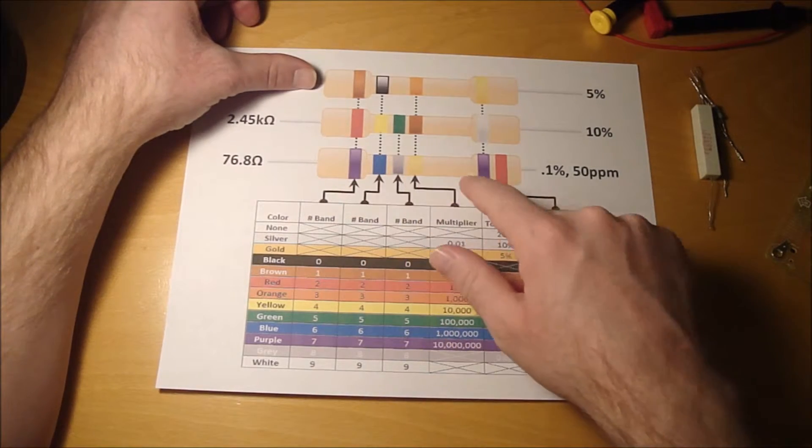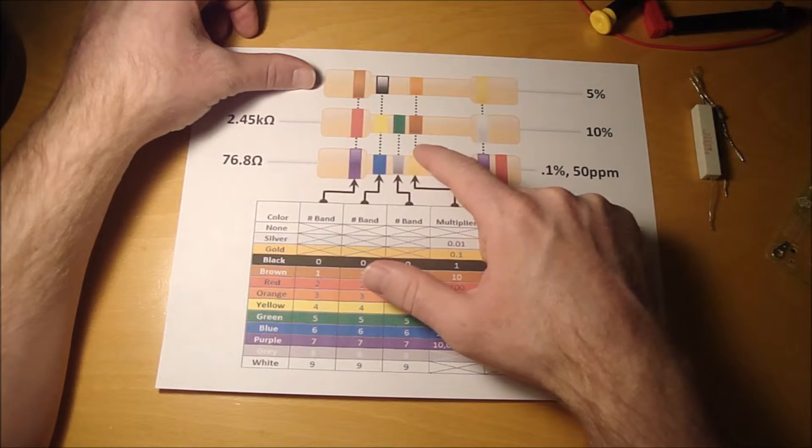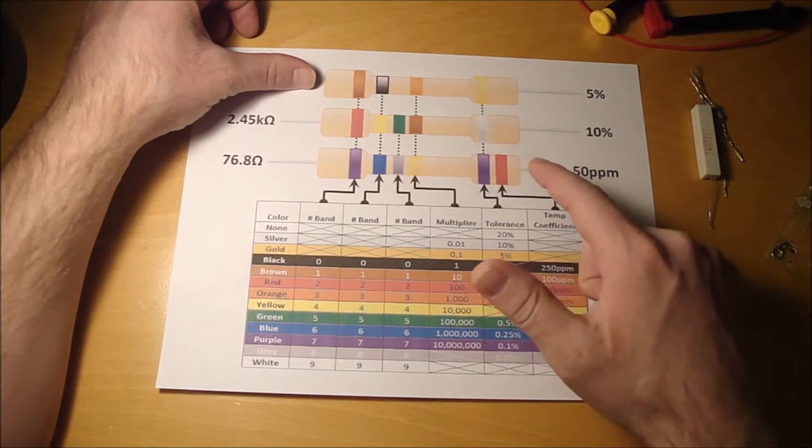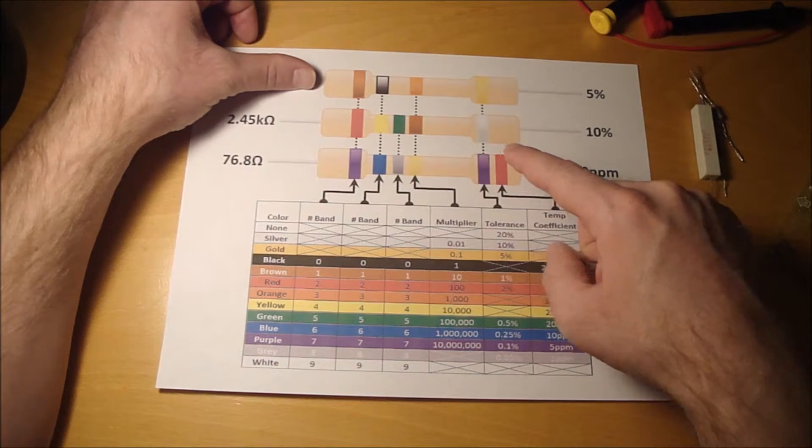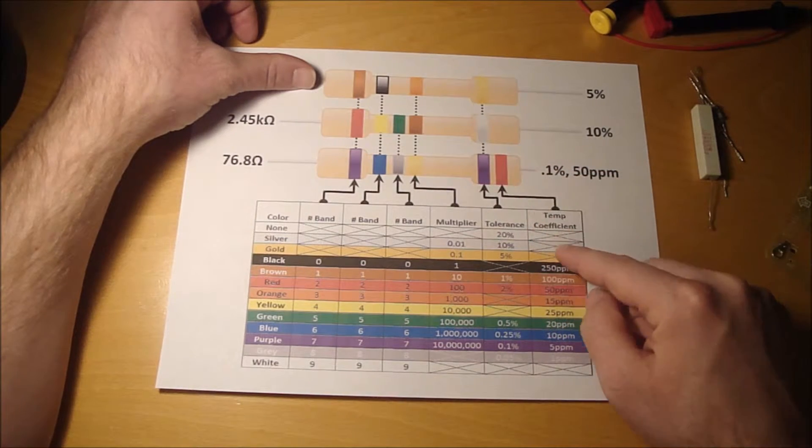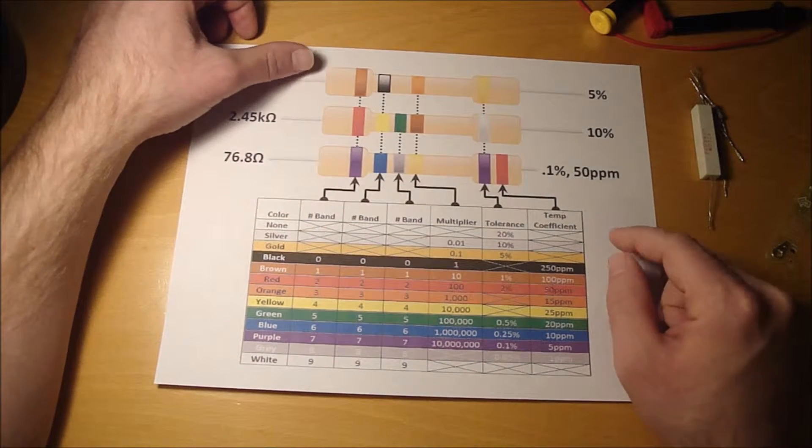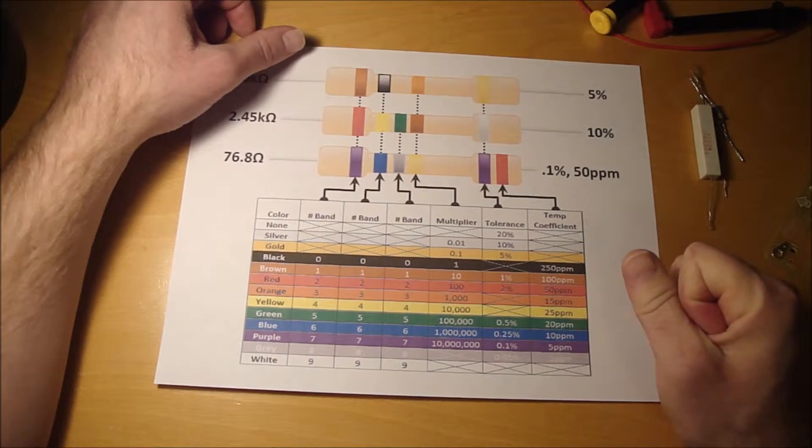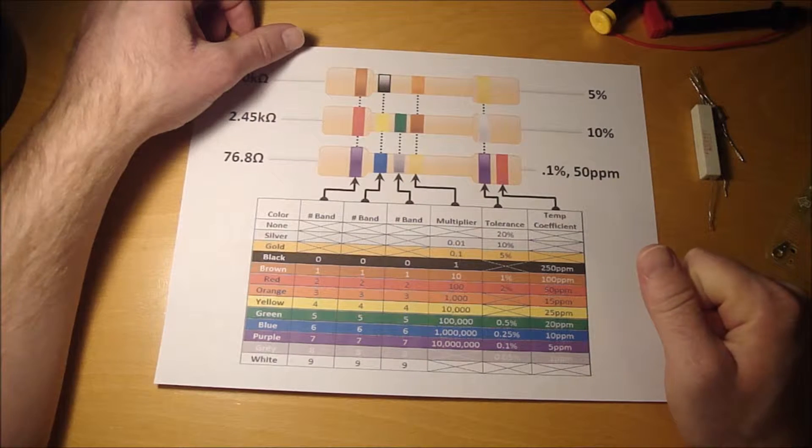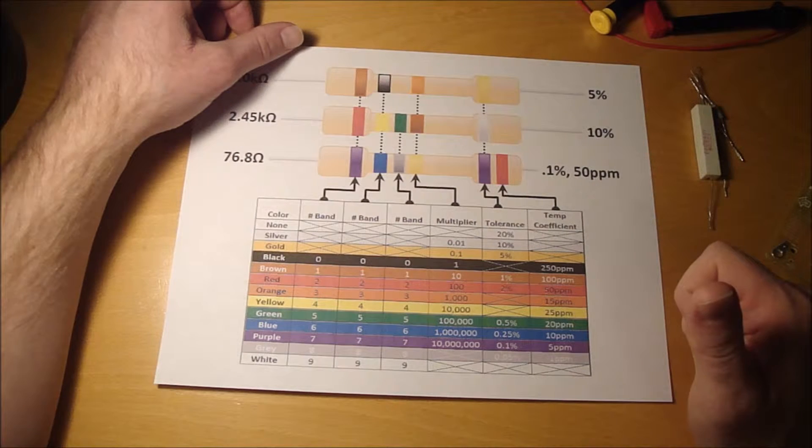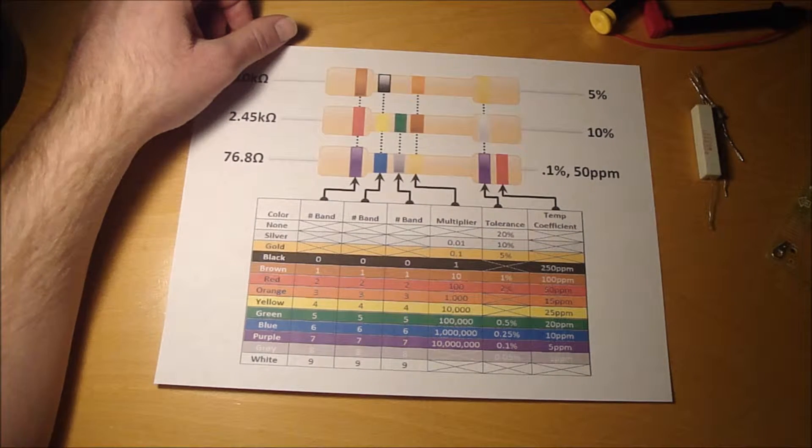And then here's a six band resistor. Just like the five band, your first three are number bands, and you have your multiplier, and then you have your tolerance. And then the sixth band is a temperature coefficient, which tells you how much the resistance changes with temperature change. I've also read that the sixth band in military applications can mean the pass-fail rate.